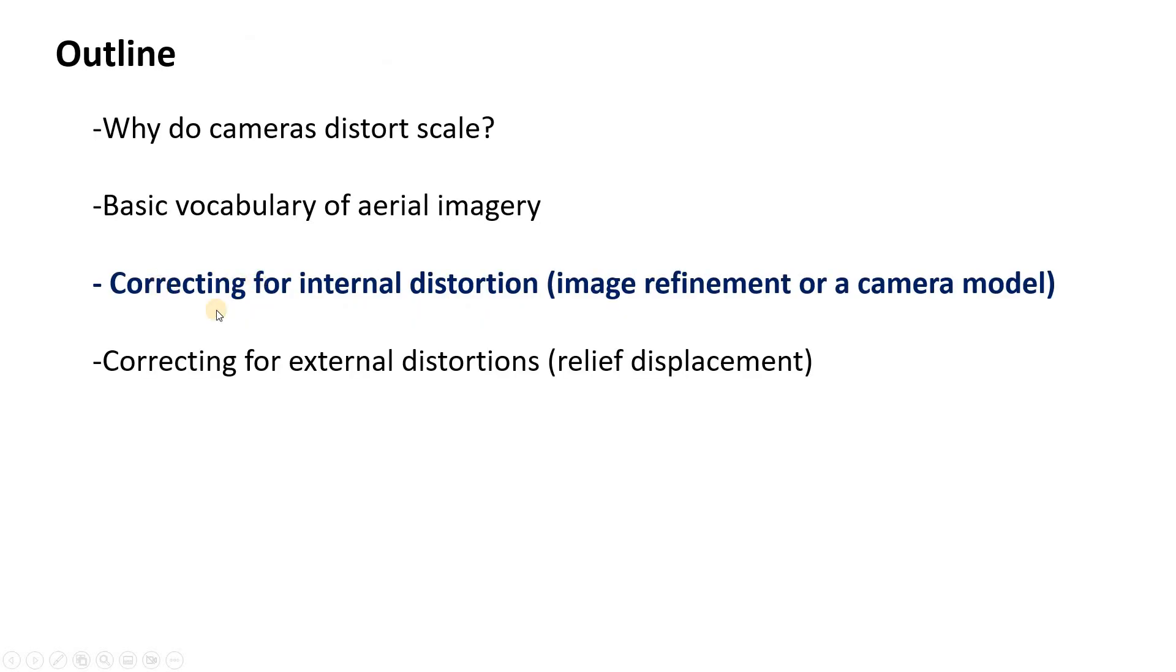So in this next part of the video we're going to talk about some of those internal sources of distortion. And correcting for these is often called image refinement or often we'll refer to using a camera model that has a lot of these geometric properties built into it.